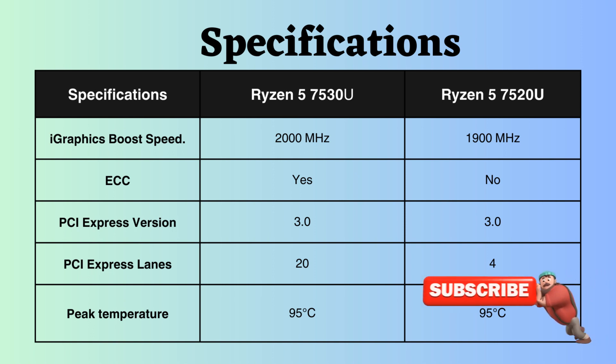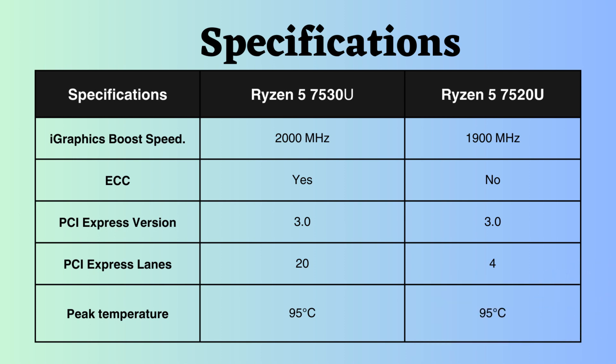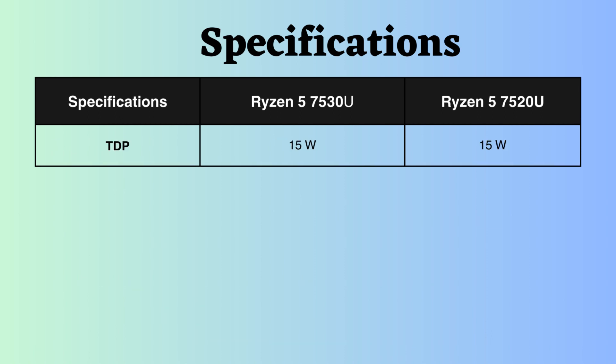They both support PCI version 3, but the number of PCI lanes supported by the Ryzen 7530U is 20, whereas that of the Ryzen 7520U is 4. Having more PCI lanes can be advantageous in terms of expanding connectivity and accommodating high-performance components. Both processors support a maximum temperature of up to 95 degrees Celsius, and the TDP of both processors is fixed at 15W, meaning that both can be configured to run at lower power consumption levels.